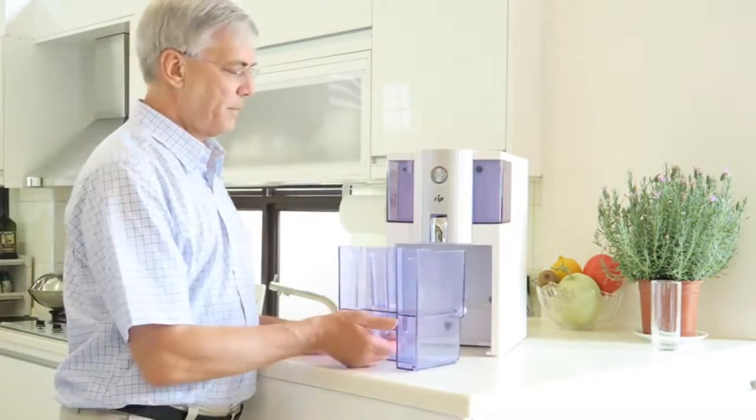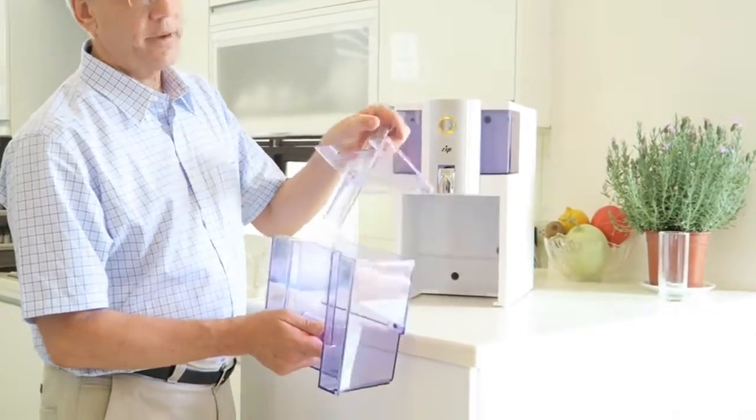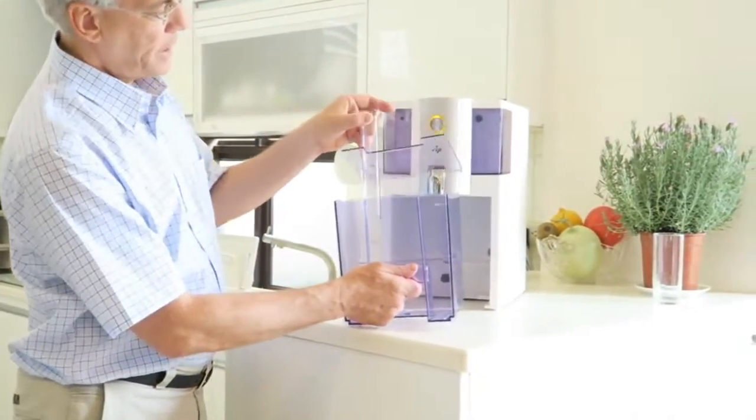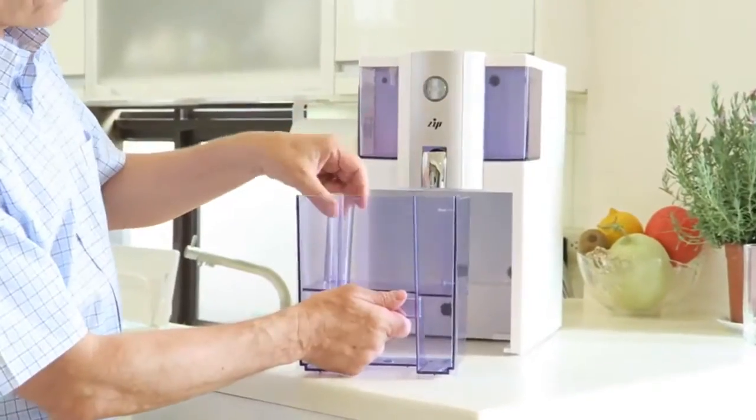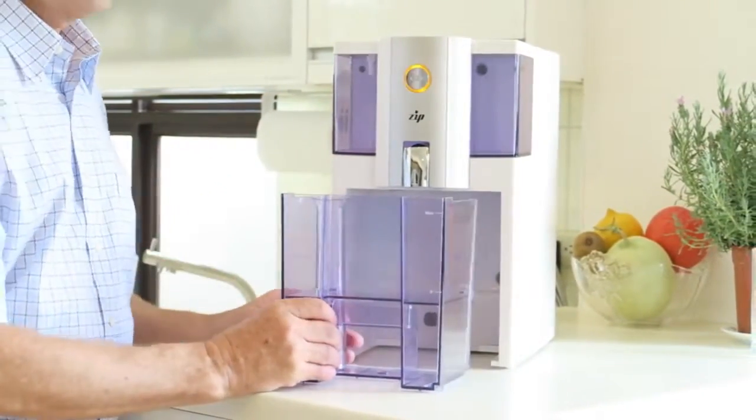Before we fill the pitcher, you will notice that inside the pitcher there is a dividing panel. The reason for the dividing panel is that once the water goes through the filter with the RO membrane,